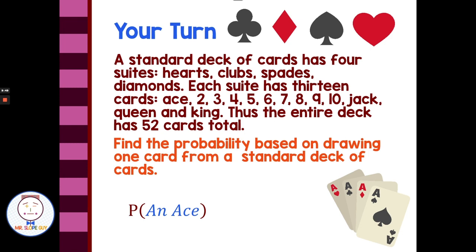A deck of cards is used a lot in probability. A standard deck has four suits — hearts, clubs, spades, and diamonds — each numbered ace, 2, 3, 4, 5, 6, 7, 8, 9, 10, as well as jack, queen, and king. There are 52 cards in a standard deck. The probability of drawing an ace: out of 52 cards, there are four aces — one for each suit — so the probability is 4 out of 52.